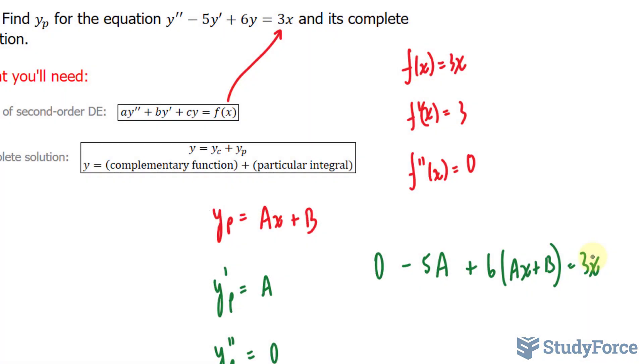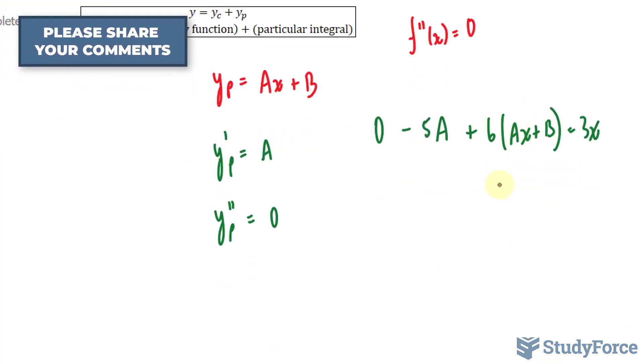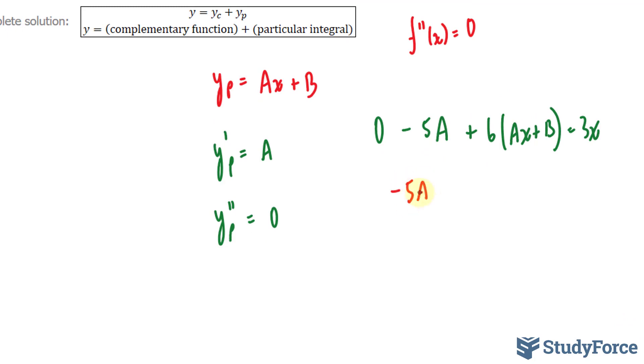Now we'll equate the coefficients on both sides of this equation. And to do that, we'll first expand this expression. We'll have negative 5a plus 6ax plus 6b equals 3x.